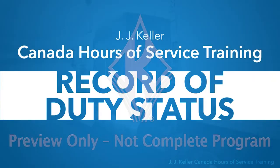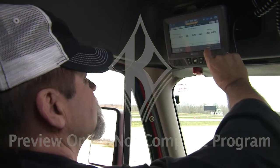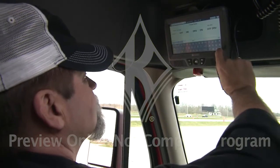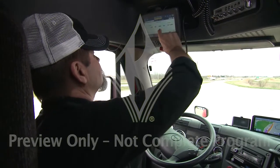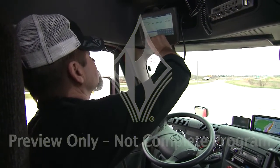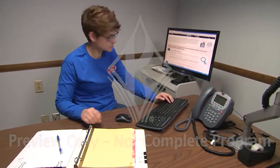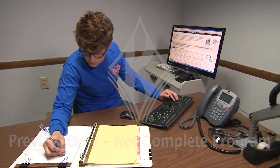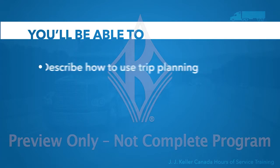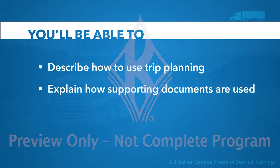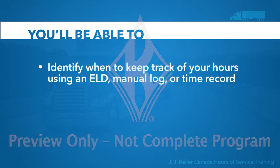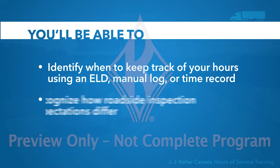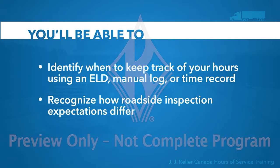Welcome to Canada Hours of Service Training, Record of Duty Status. You can record your hours of service electronically, manually, or by keeping a time record. This program is designed to teach you when each type of record can be used and how each is evaluated during a roadside inspection. It also helps you with planning your trips to avoid violations. After completing this module, you'll be able to describe how to use trip planning to achieve successful time management, explain how supporting documents are used to validate recorded hours, identify when to keep track of your hours using an ELD, manual log, or time record, and recognize how roadside inspection expectations differ between ELDs, manual logs, and time records.